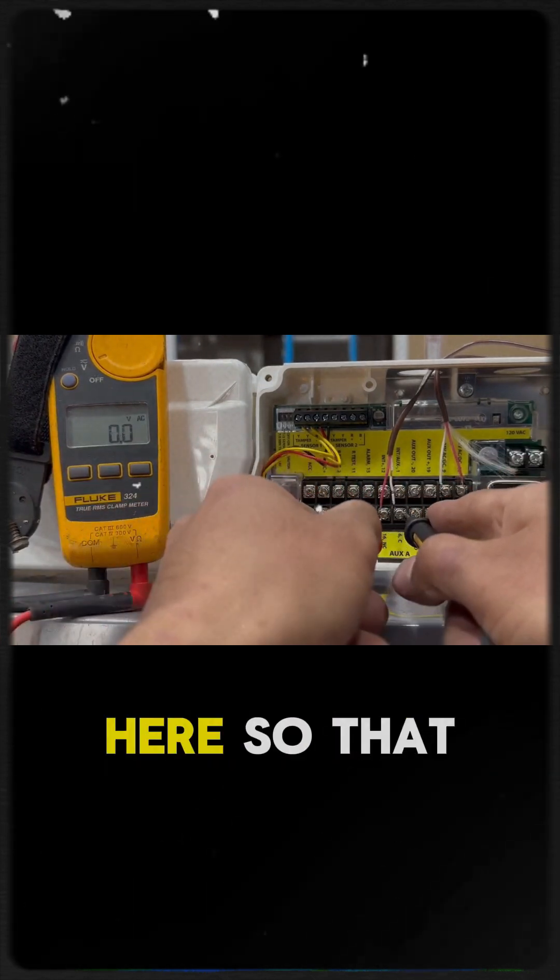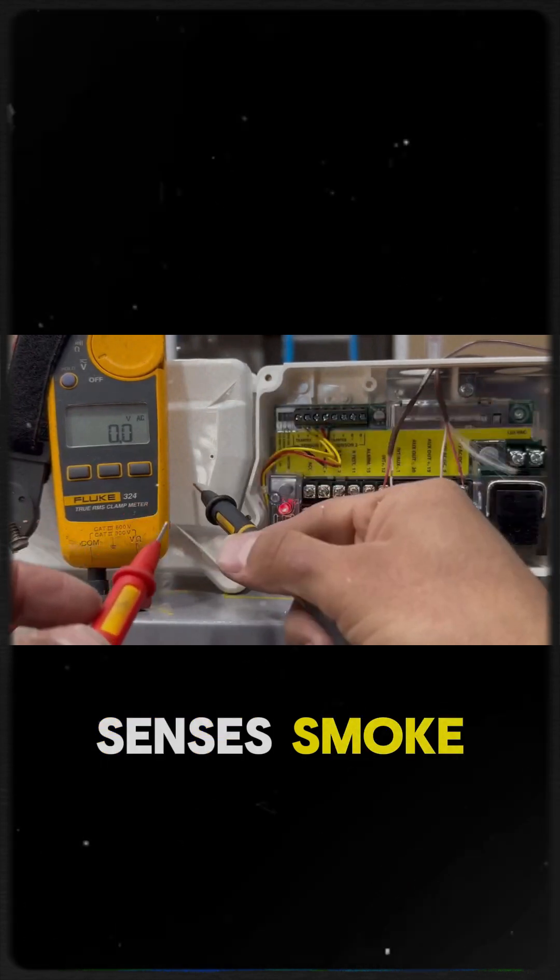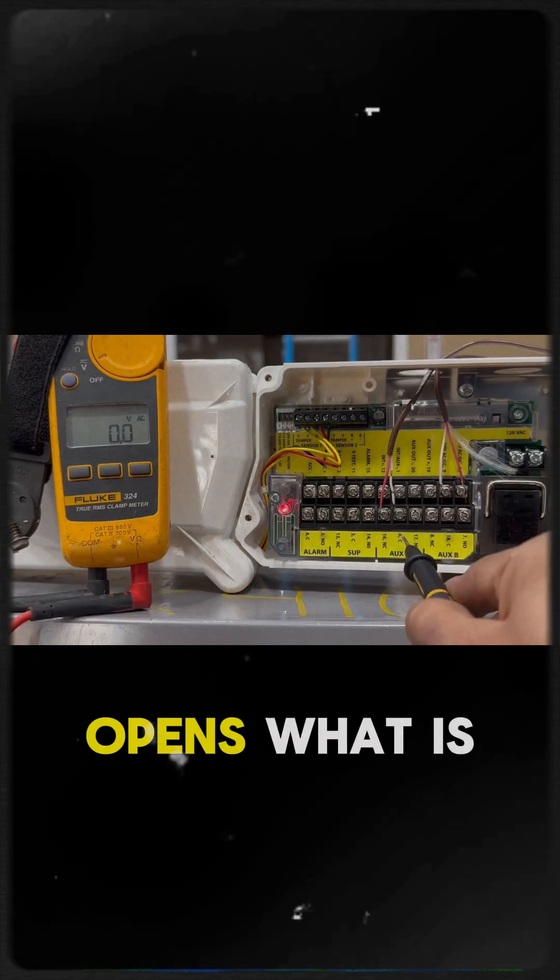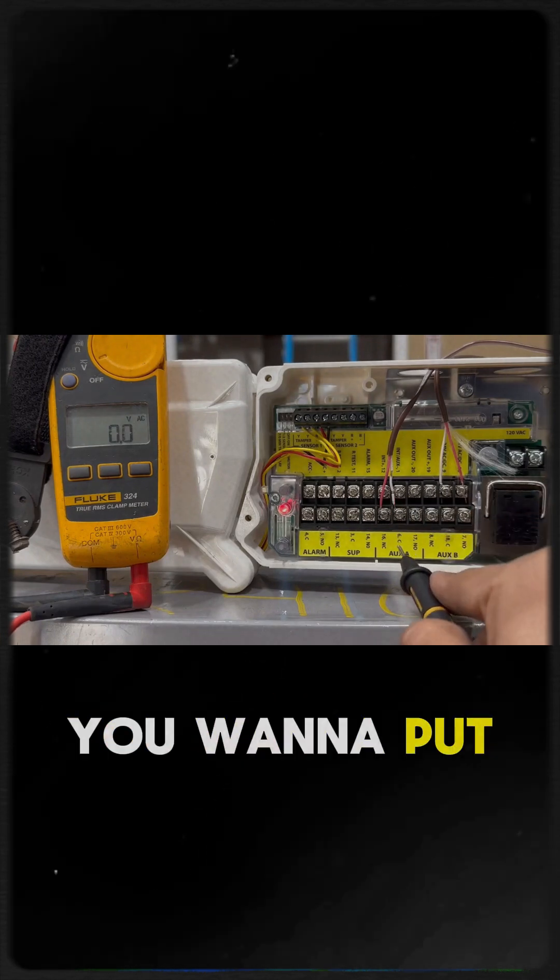If the sensor senses smoke, it's going to open. That means what was normally closed opens, what is normally open closes. And that's why you want to put it between the NC and the C.